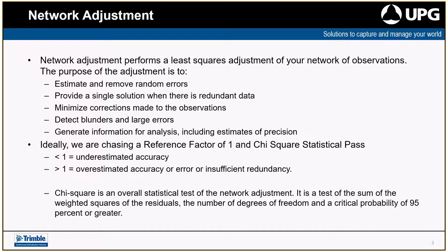For a network adjustment, ideally we're looking for a reference factor of 1 and a chi-squared test pass value. If you get a value less than 1, you've underestimated the accuracies and may need to tweak your standard deviations. On the other side, if you get a value greater than 1, you may have overstated your accuracies — for instance, you said you need a 1-second instrument when it's actually a 5-second one — or you've blown it out to 10 seconds because you weren't sighting correctly and your instrument wasn't in adjustment.